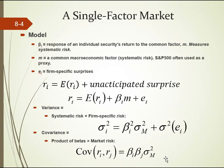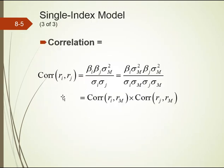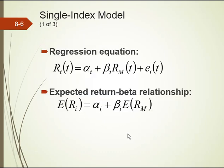What you can see here is that the data required to calculate return, variance, standard deviation, and covariance is much less. To find the correlation you just need the correlation between the asset and the marketplace. The calculation simplifies to: beta of asset A times the variance of the market, times beta of asset B times the variance of the market, divided by the product — which simplifies essentially to correlation times correlation. Very few data points are actually needed.